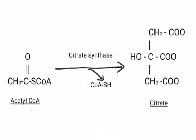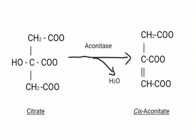Acetyl CoA, in the presence of the enzyme citrate synthase, gets converted into citrate. Now citrate, in the presence of the enzyme aconitase, gets converted into cis-aconitate, and a water molecule is liberated.